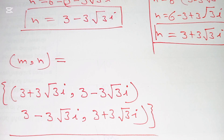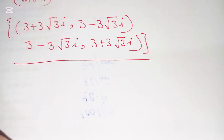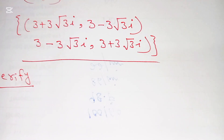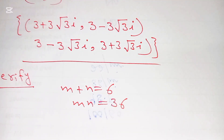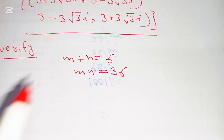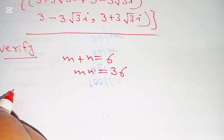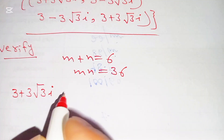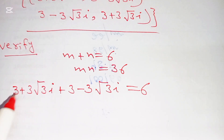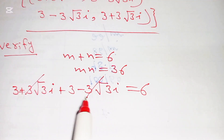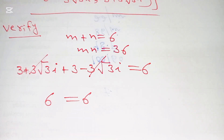Now let's verify. We check m plus n equals 6 and m times n equals 36. Substituting: (3 plus 3√3·i) plus (3 minus 3√3·i) equals 6. The imaginary parts cancel, and 3 plus 3 equals 6, so this checks out.